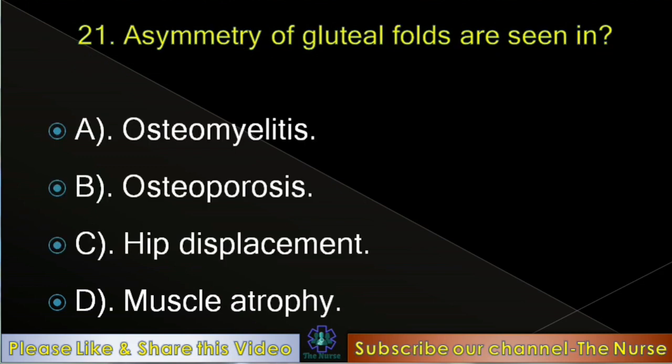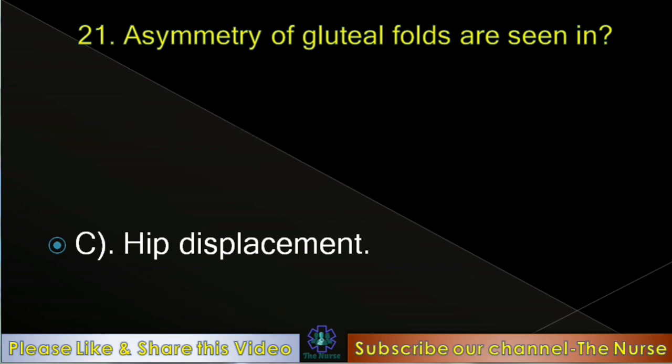Next question: Asymmetry of gluteal folds is seen in — osteomyelitis, osteoporosis, hip displacement, or muscle atrophy. Correct answer: Hip displacement.